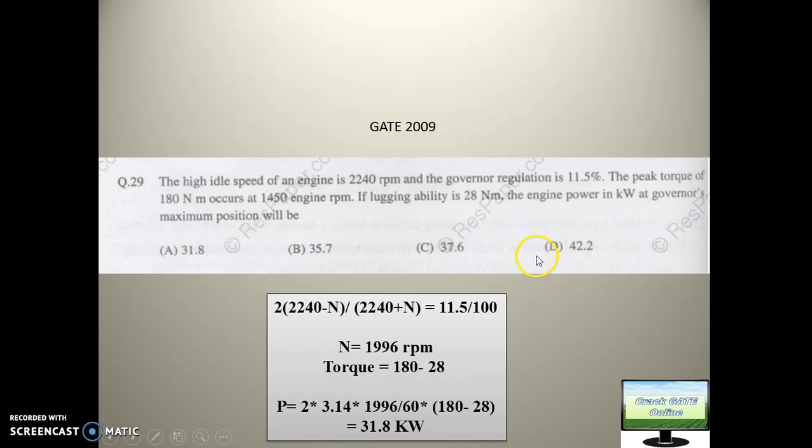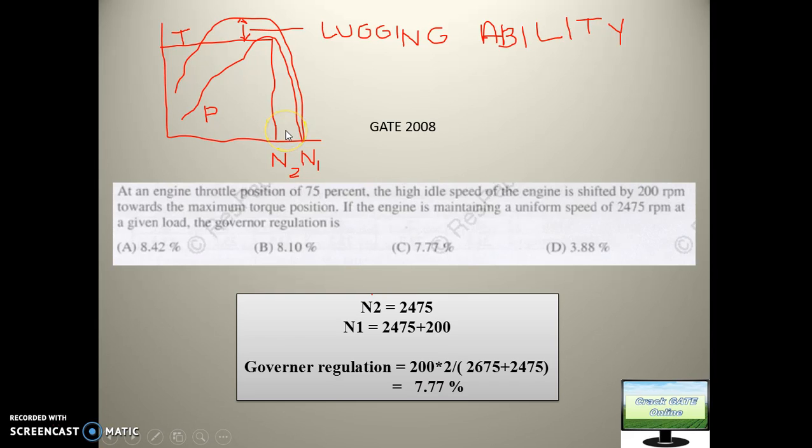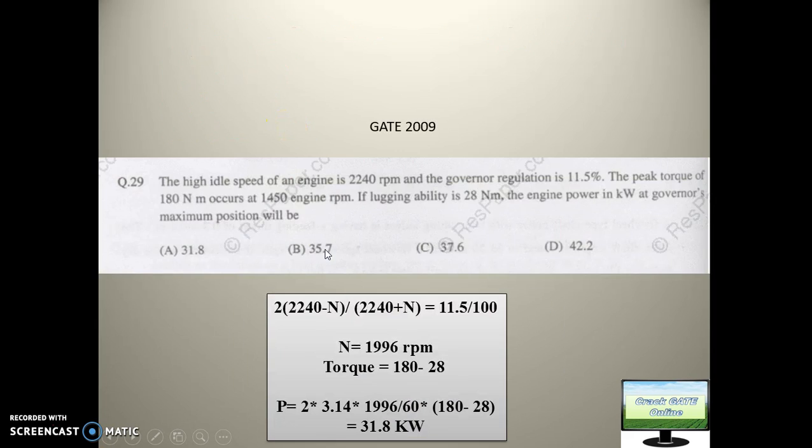They are asking about power. You know the formula: power equals 2 times pi times N times torque. So torque value you got. Now you want RPM value. At high idle engine speed, RPM is given as 2240. This is the N1 value. But we don't have N2 value here. So N2 value we need to calculate from the governor sensitivity formula.